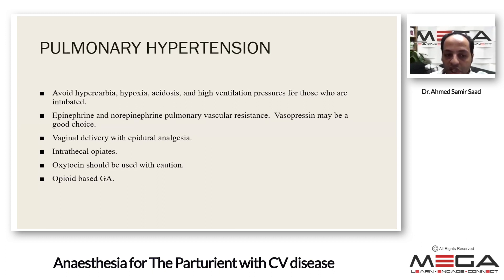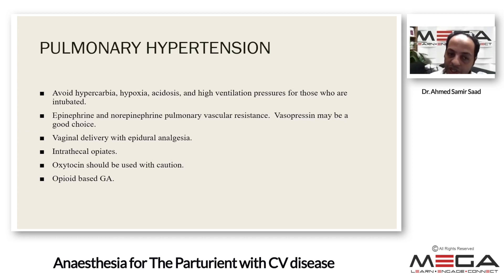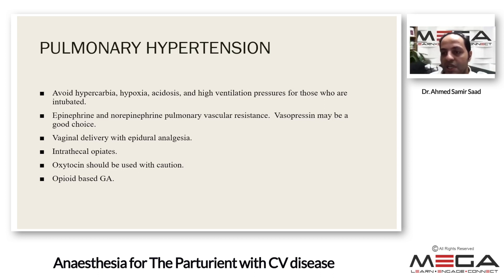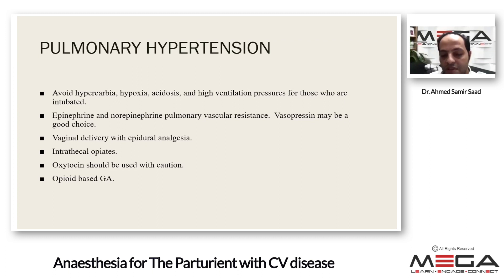For vaginal delivery in pulmonary hypertension patients, use epidural analgesia and intrathecal opiates such as fentanyl 25 micrograms. Oxytocin should be used with caution as it decreases systemic vascular resistance and may increase pulmonary hypertension. If going to general anesthesia, it should be opioid-based.